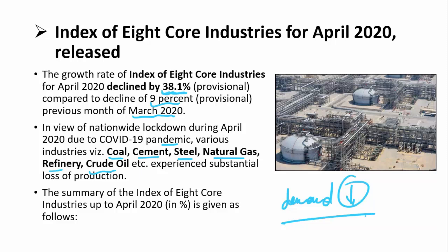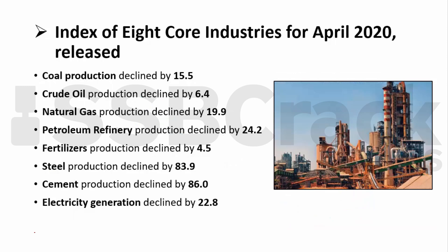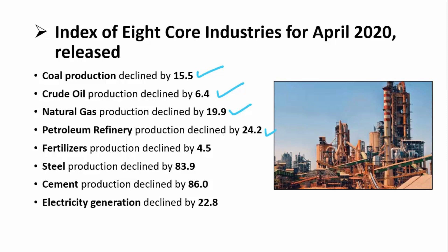Looking at the summary figures for each of the eight core industries up to April 2020: coal production declined by 15.5 percent; crude oil declined by 6.4 percent; natural gas suffered the maximum blow, declining by 19.9 percent; petroleum refineries declined by 24.2 percent; and fertilizers declined by just 4.1 percent, as rural sectors were less impacted due to central government policies.